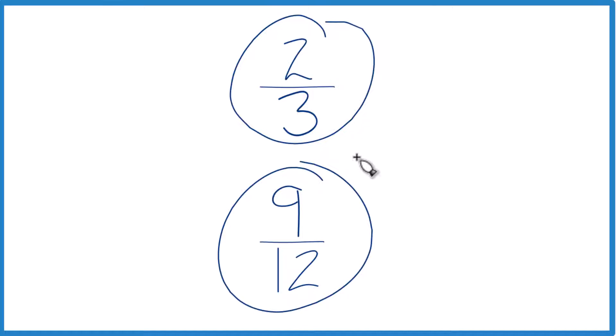So the first thing you could do is you could just type two-thirds into a calculator. Two divided by three, get a decimal. Nine divided by twelve, get a decimal, and just compare them to see whether two-thirds is greater than or less than nine-twelfths.